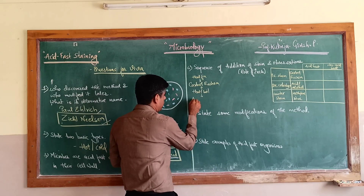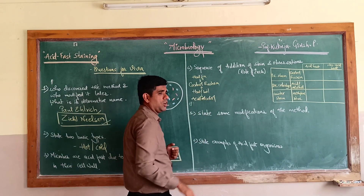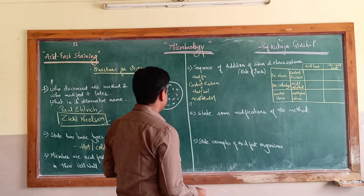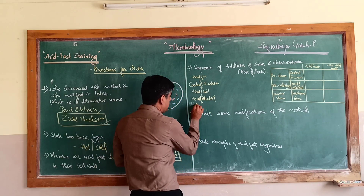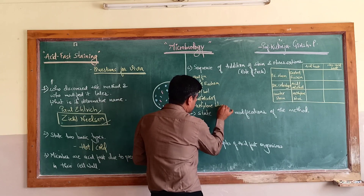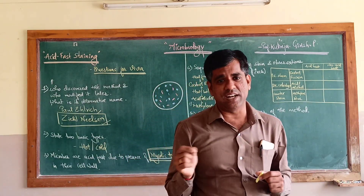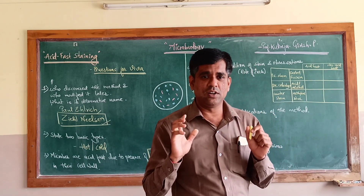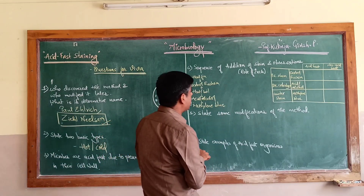Then you add the decolorizer, which is acid alcohol - around 20% H2SO4. Decolorize properly with this acid alcohol, water wash, then go for counterstaining with methylene blue. Some also use malachite green as a counterstain, but that is very rare. Most commonly we use methylene blue as the counterstain.